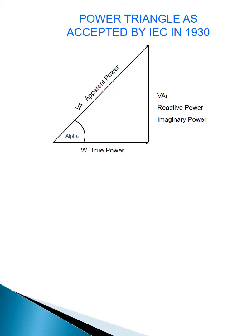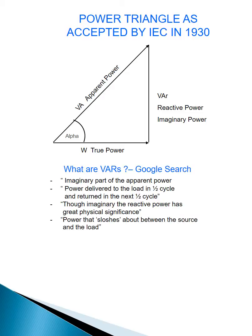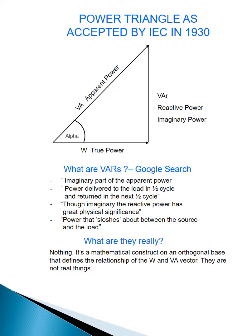So what are VARs? I did a quick Google search and this is what comes up. Obviously there is great confusion. Power that is lost, imaginary power that has great physical significance. But what are they really? Well, nothing. VARs are actually a mathematical or a vector construct on an orthogonal base or right angle base that defines the relationship between the watt vector and the VA vector. Not real things. It's just a mathematical construct.